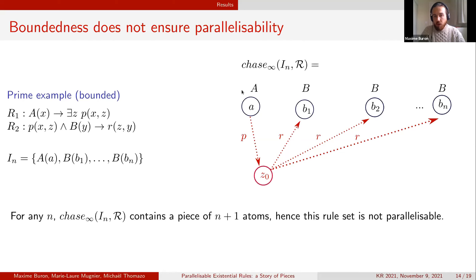The resulting chase is the following where first in the first step of the chase we apply R1 in order to derive the relation p(a, z0) where z0 is a null. In the second step of the chase we will derive all the r relations between z0 and the b's.